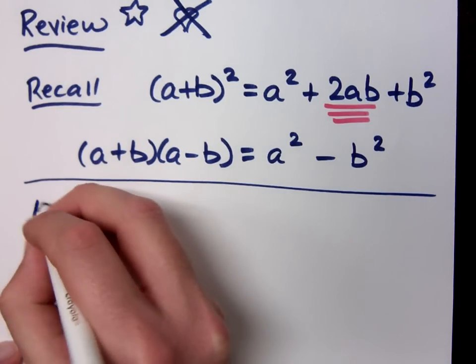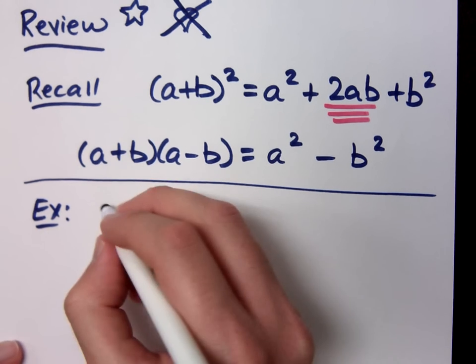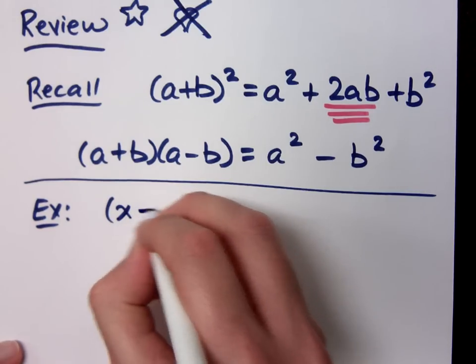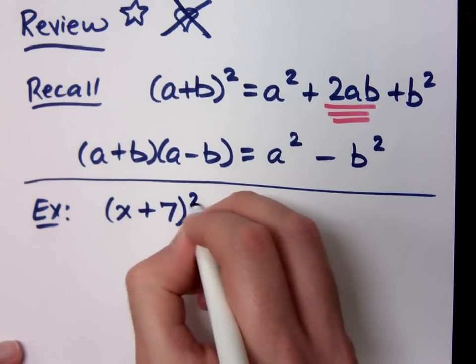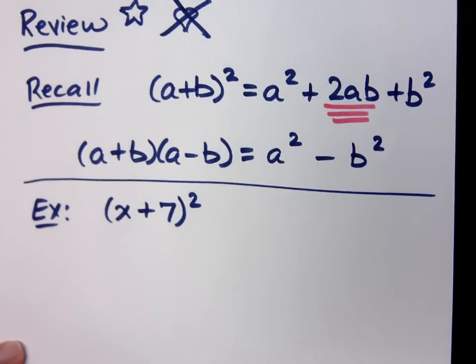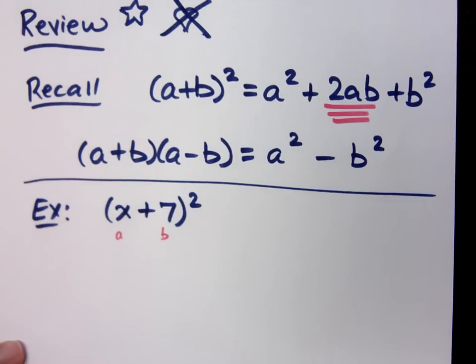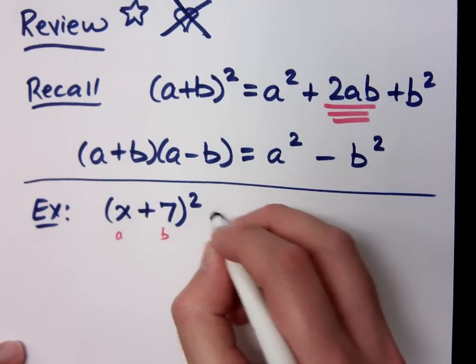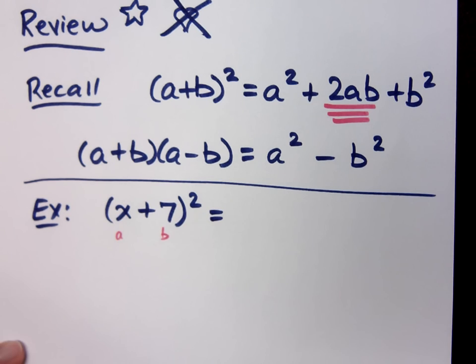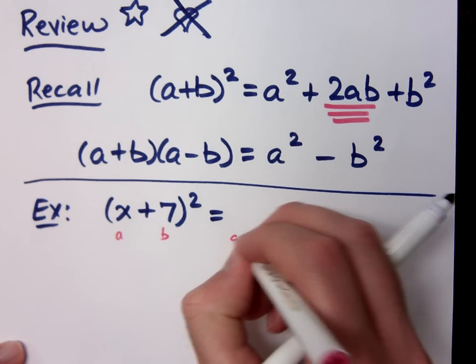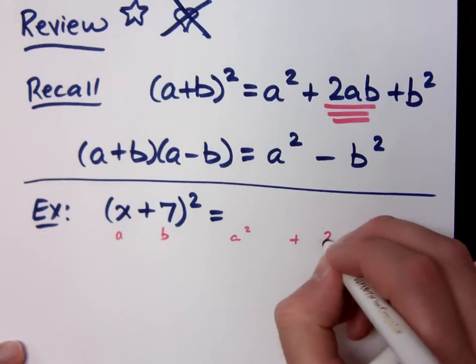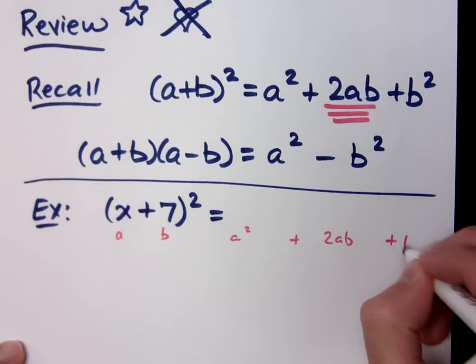All you need to do is use these special products and apply them. If I have (x+7)², you have to be able to identify that this is a and this is b. We use the special product to multiply this. Sometimes it helps to just sketch the special product underneath like this.